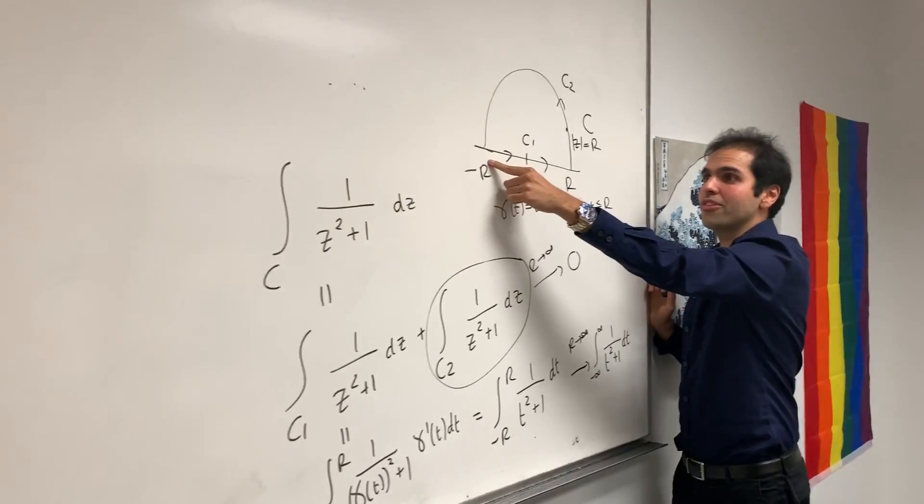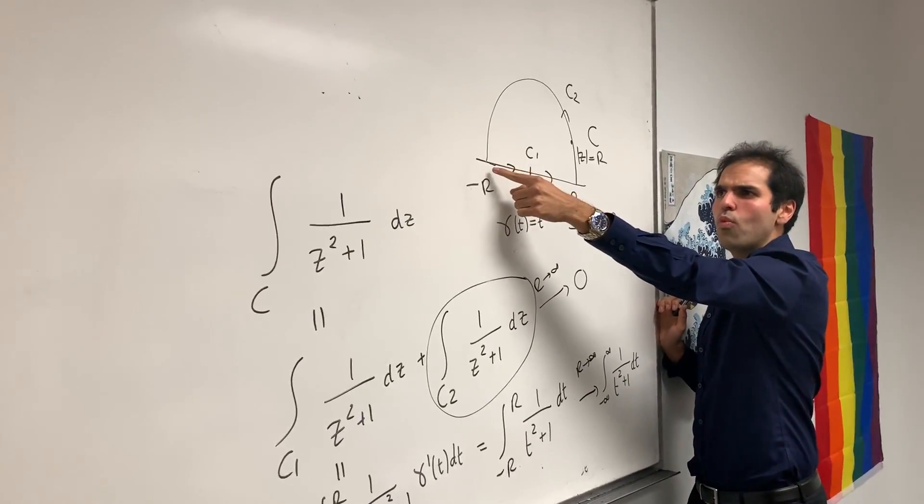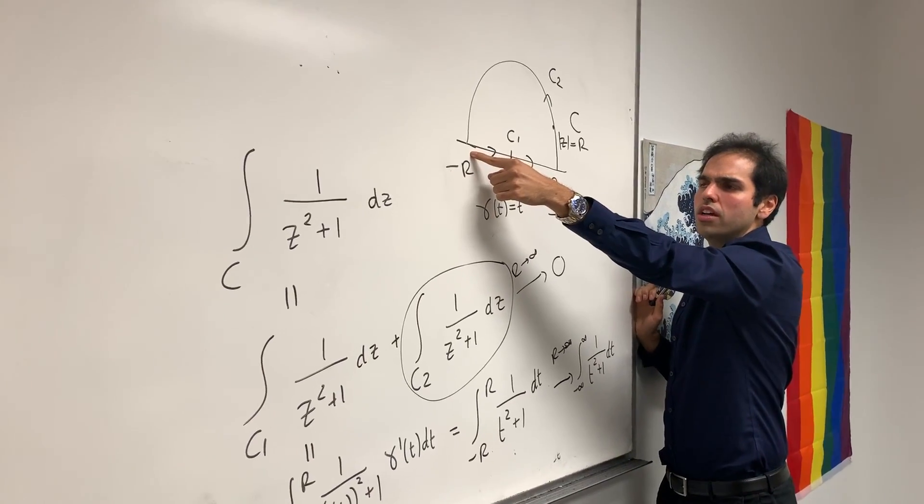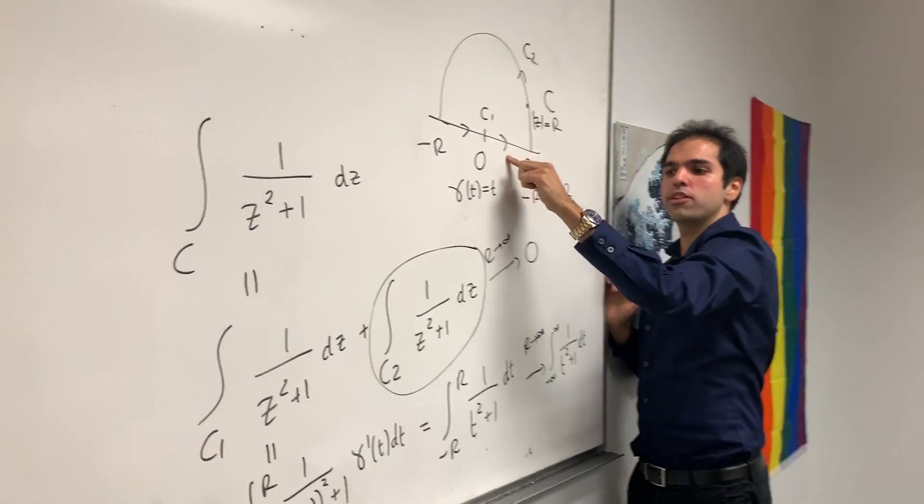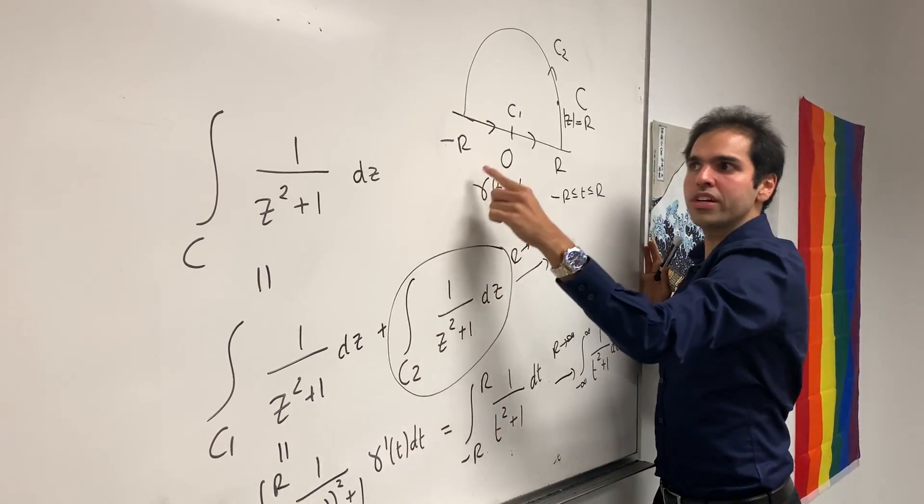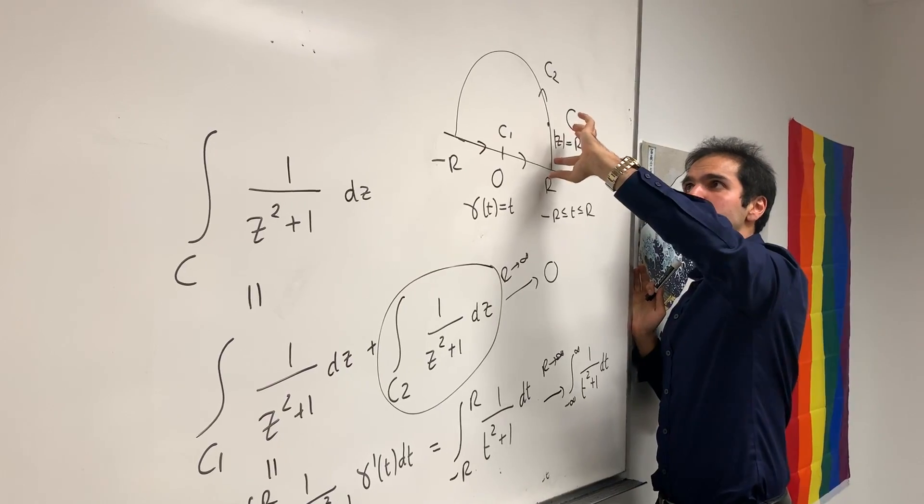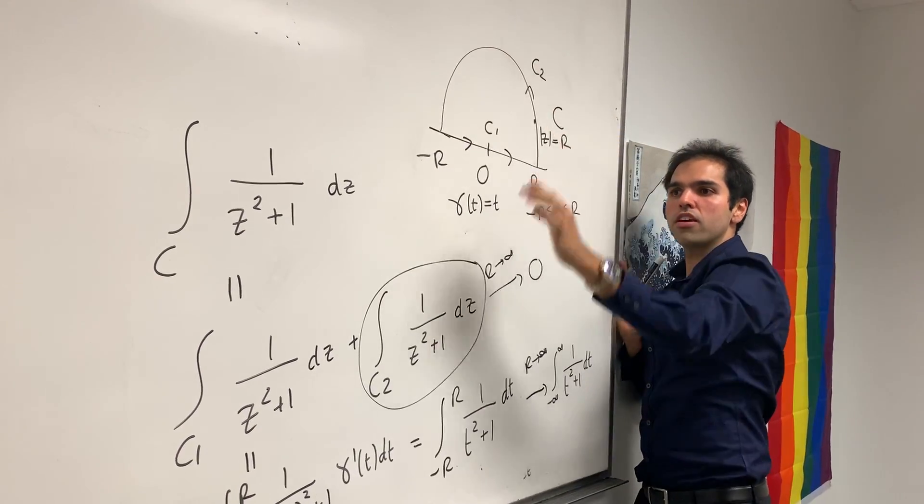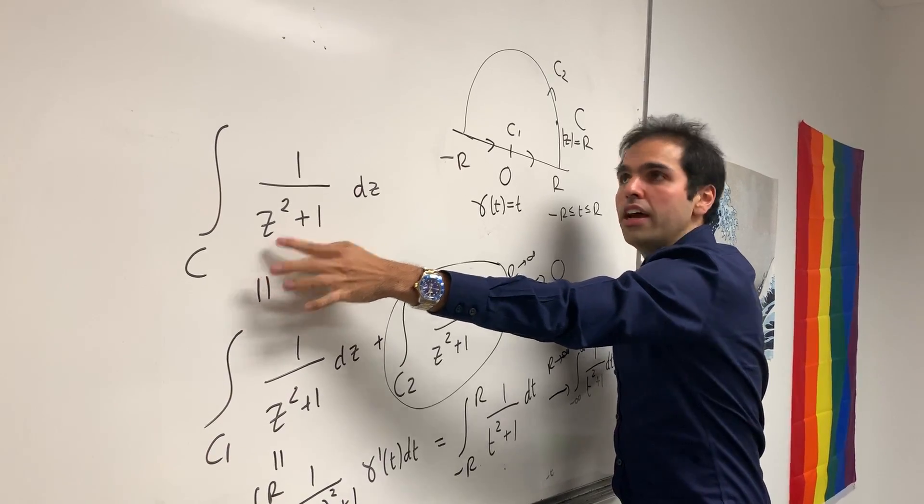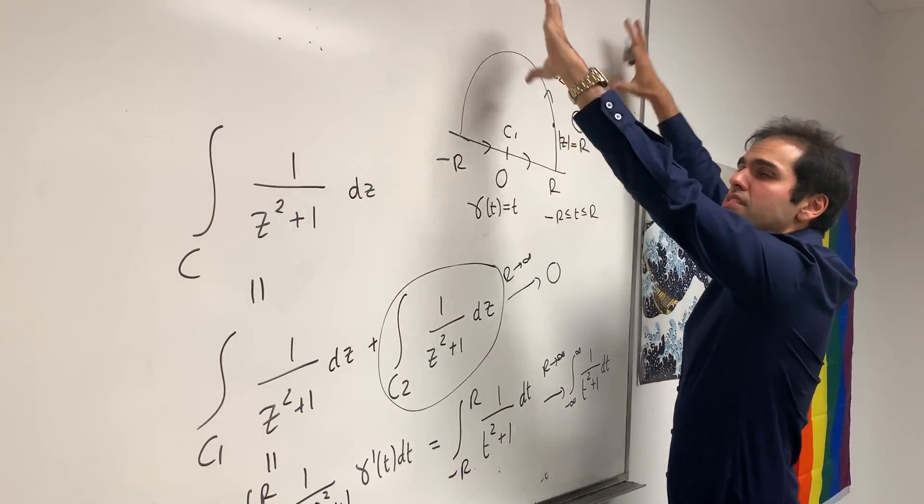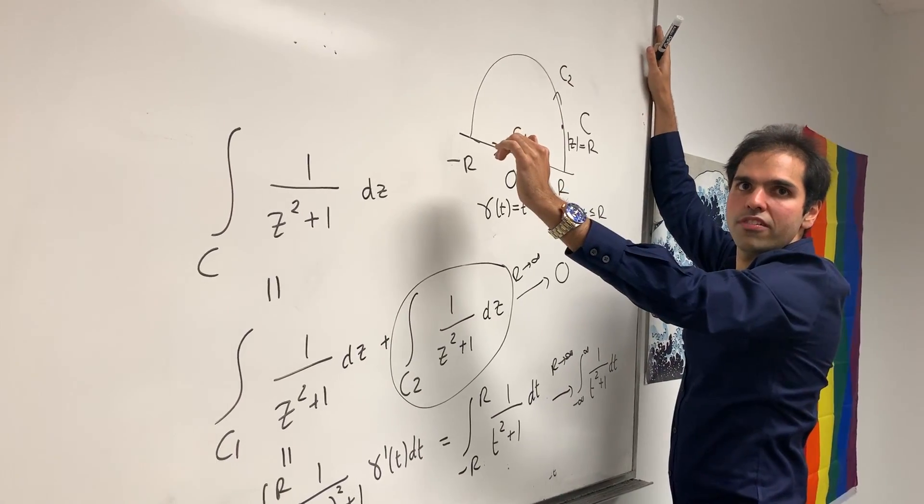Why did we choose this semi-circle? Well, we needed this straight part to get our original integral. And then it turns out this curvy part, on the curvy part, the function is very small. I see. And that's why if this thing blows up, the integral goes to 0.